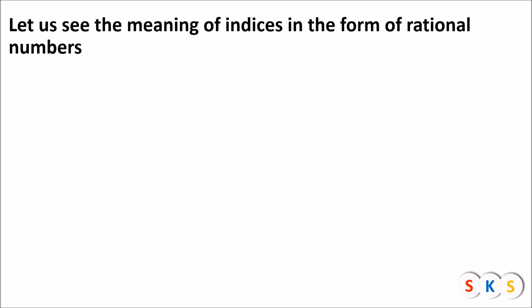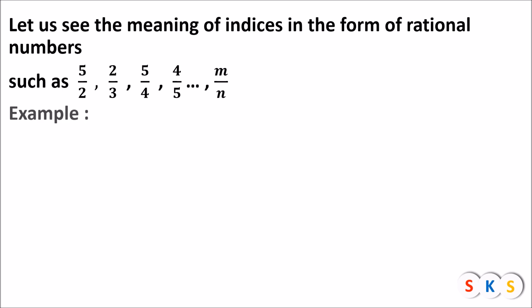Let us see the meaning of indices in the form of rational numbers such as five upon two, two upon three, five upon four, four upon five — that is m upon n. These are all rational numbers. The most important point is that the numerator of each fraction is other than one. For example, 10 raised to two upon three, 5 raised to seven upon nine, 3 raised to three upon four — the index of each index form is a rational number where the numerator is other than one.